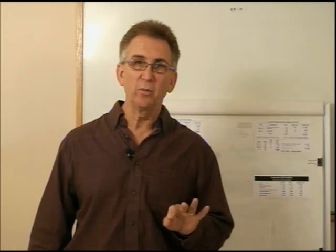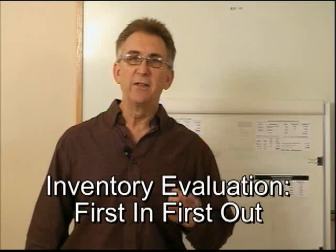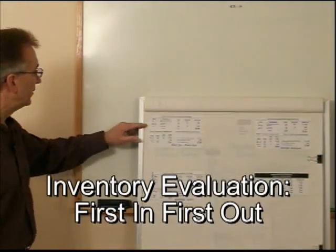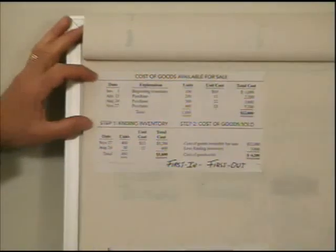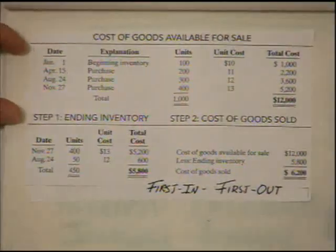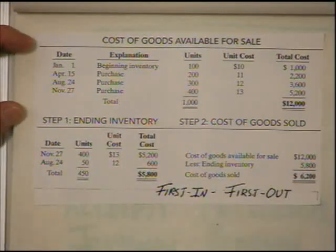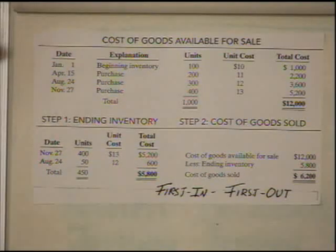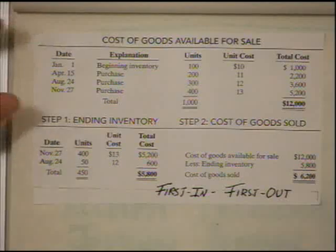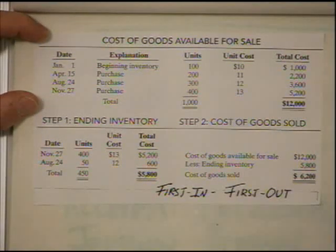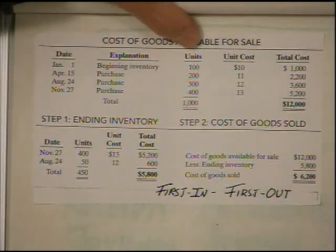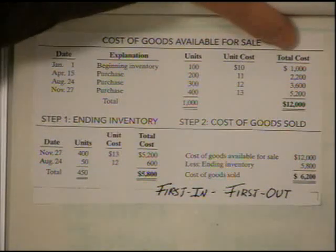There are three basic ones that we're going to go through here. This is the first, called first in, first out. As I draw your attention to the chart, this says cost of goods available for sale. I want you to understand that this is in your text, and this analysis is just a presentation of the actual purchases of units for this company throughout the year. We'll use this in all three inventory costing methods. As we look through the data, on January 1st we had 100 units available at $10 a unit, so extended out the cost is $1,000.